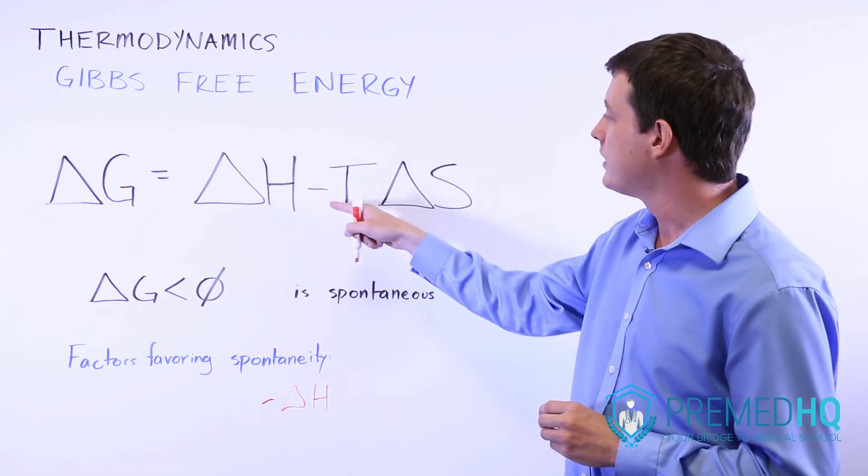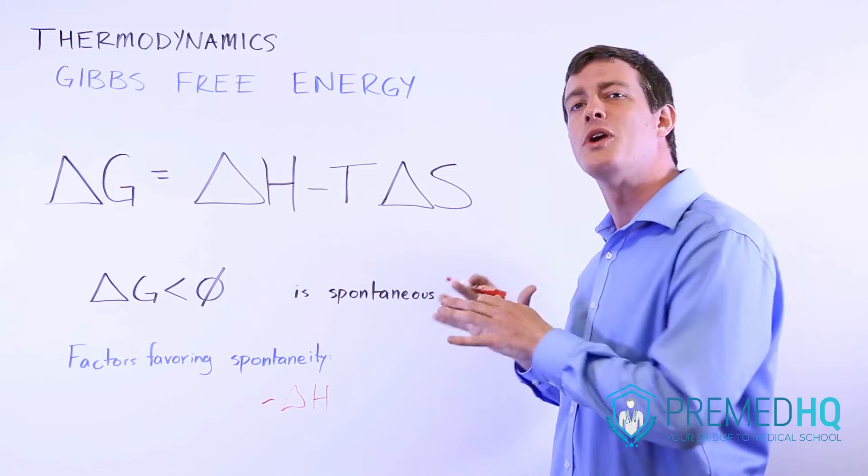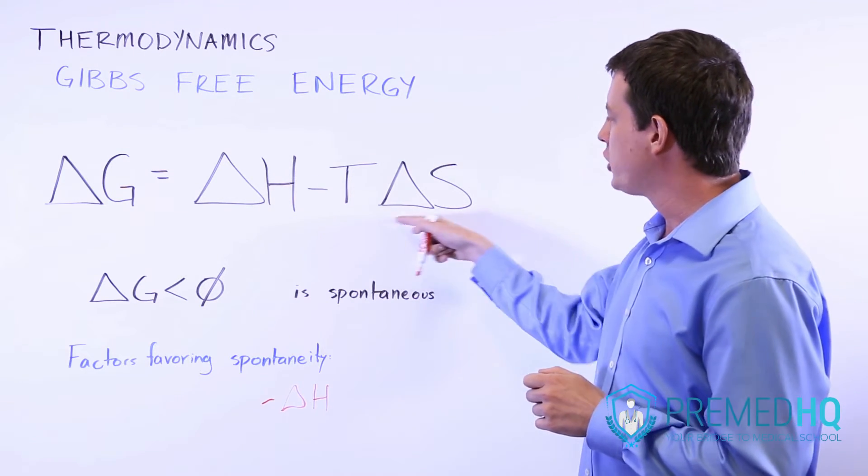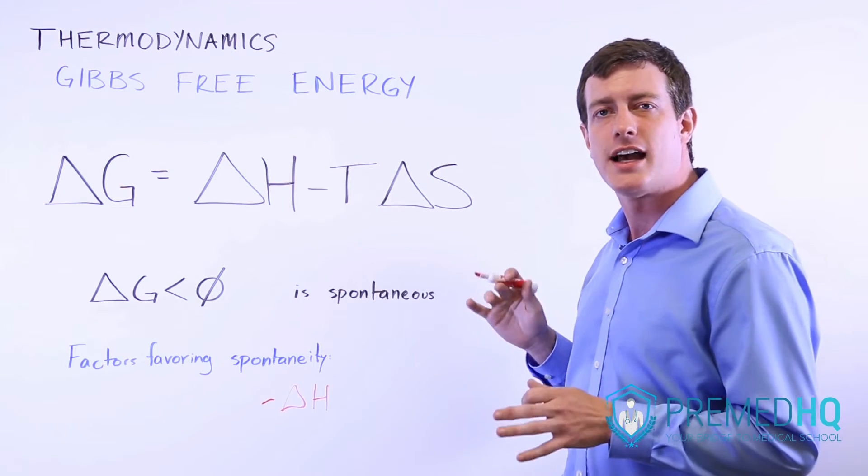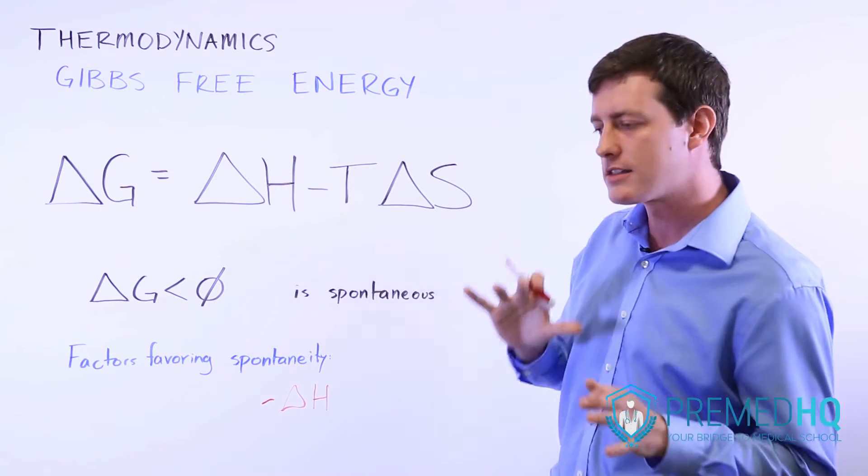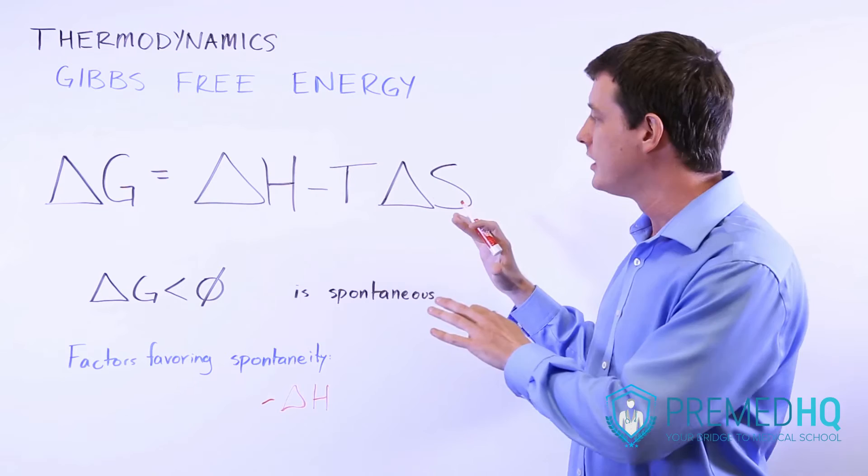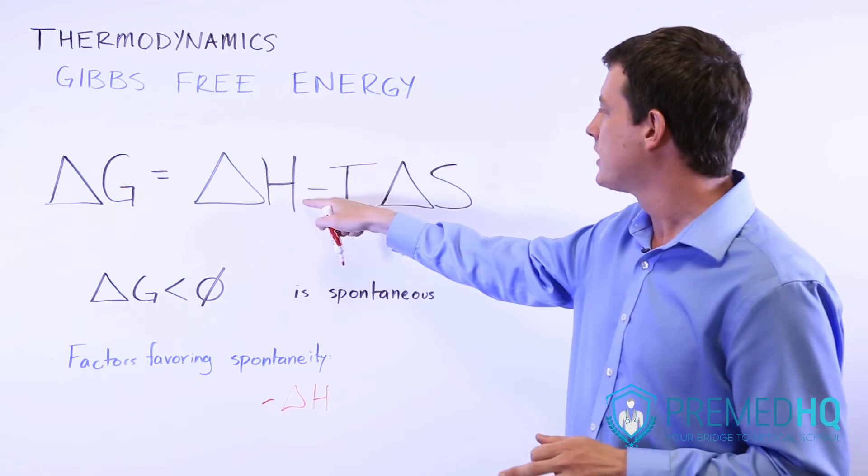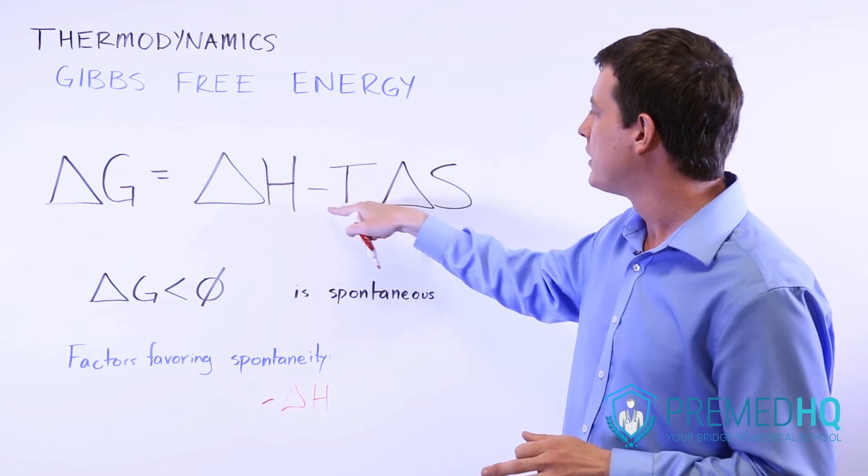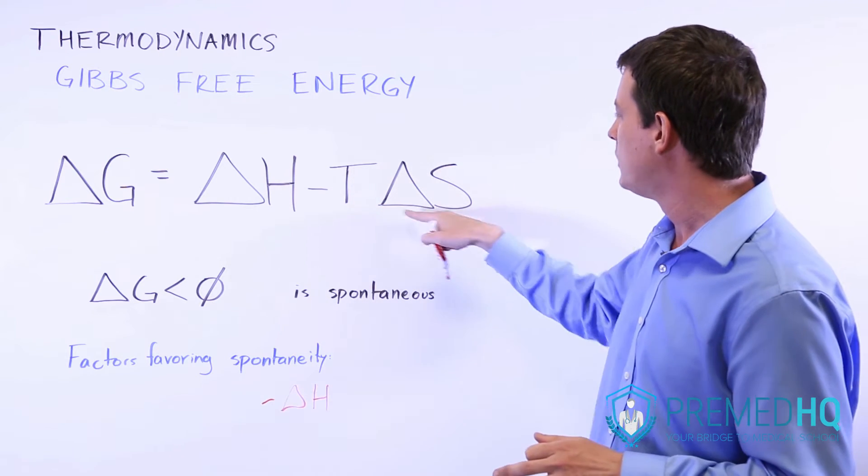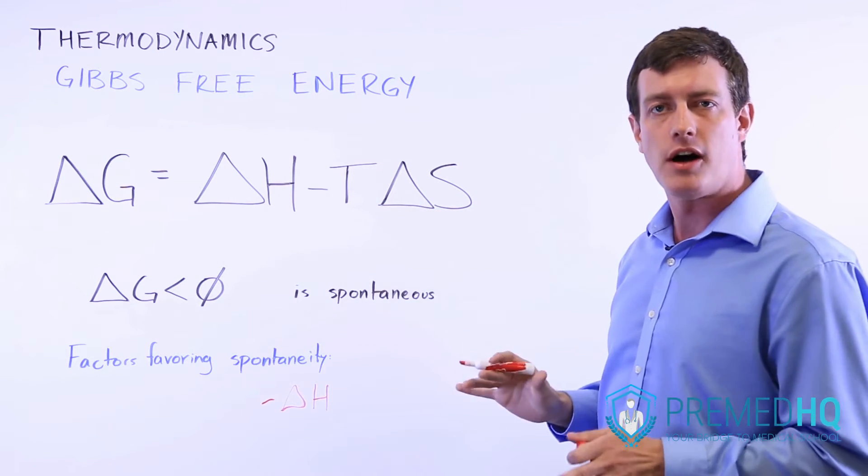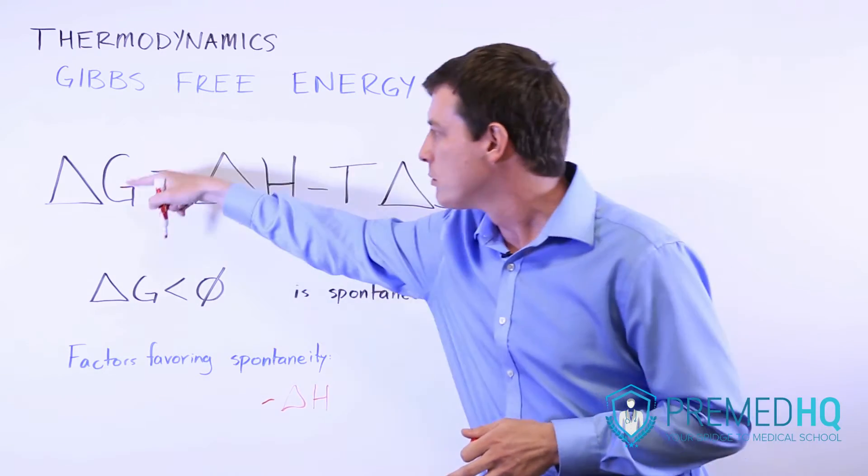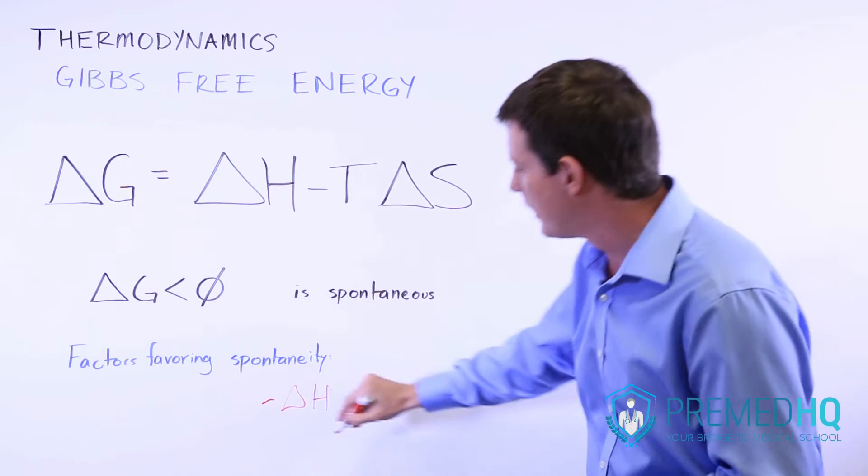Similarly, because temperature is measured in Kelvin and will thus always be positive, anything with a positive change in entropy, a positive delta S of that system, meaning that the system becomes more disordered, that will favor a decrease in the Gibbs free energy because you're subtracting this term. We know this is positive. And so if the change in entropy is positive, then that also means that we're subtracting a positive number and we're pushing Gibbs more toward the negative side.